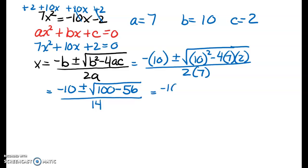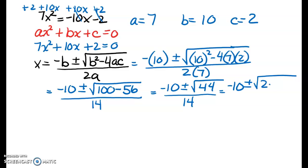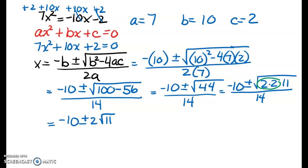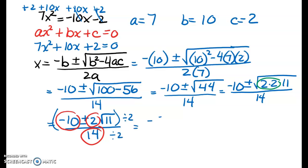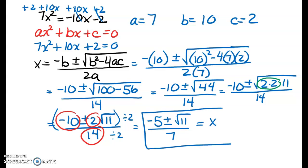So 100 minus 56 is 44, all over 14. How does 44 reduce? Well, 44 is 2 times 22, and 22 is 2 times 11. I have a nice group of two 2s, so I end up with negative 10 plus or minus 2 square root of 11 over 14. All my numbers are divisible by 2, so taking out a 2 gives me negative 5 plus or minus the square root of 11, all over 7. Those are my answers for x, because negative 5 and the square root of 11 are not like terms.